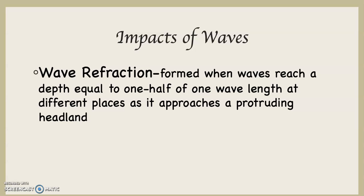A protruding headland is just a piece of land sticking out in the ocean, like a small peninsula. Remember that when a wave reaches a depth equal to one half of one wavelength, several things begin to happen: there begins to be drag along the ocean floor which slows the wave down, the wave begins to build up because the energy is pressed into a smaller area, and we get what we generally call a wave cresting over — kind of like a surfable wave.